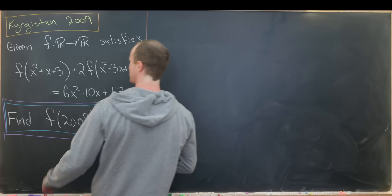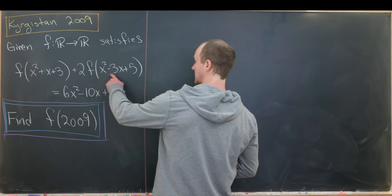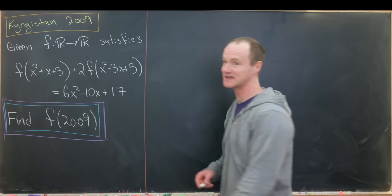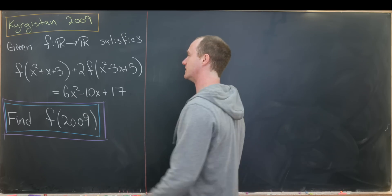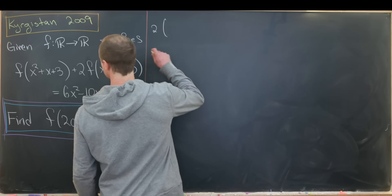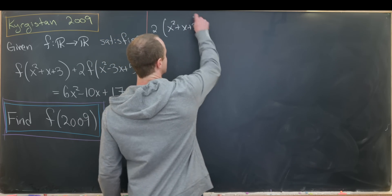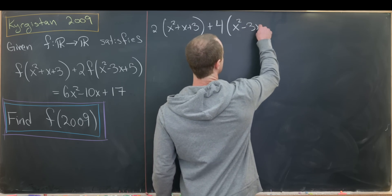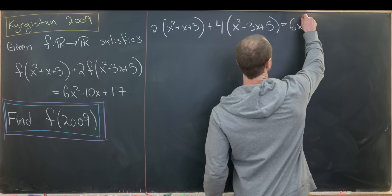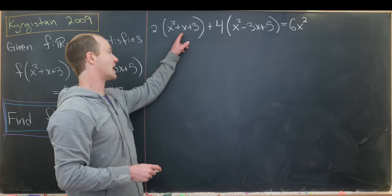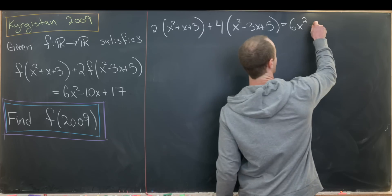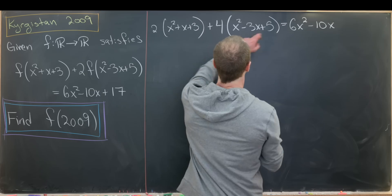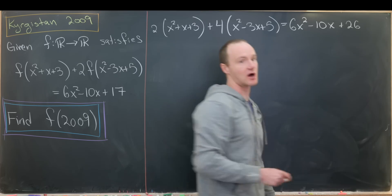Let's notice this: if we take twice the first polynomial and four times the second polynomial, we'll end up with 2x² + 4x², which gives us 6x². We've at least built this leading coefficient. So we'll take two times (x² + x + 3) and add that to four times (x² - 3x + 5). That's going to give us 6x² for our leading term, then 2x - 12x, so minus 10x for our linear term, and then 6 + 20, so 26 for our constant term.